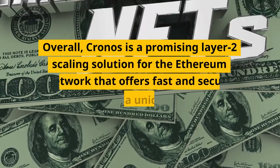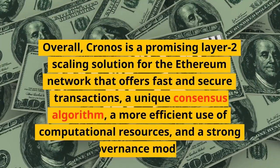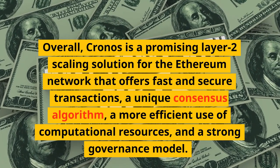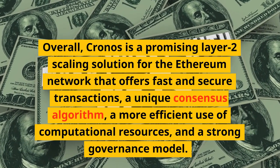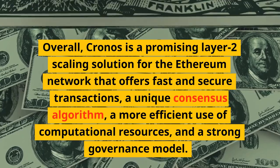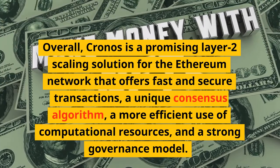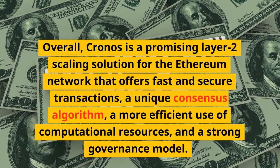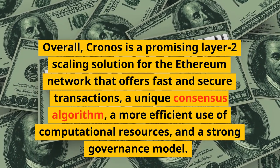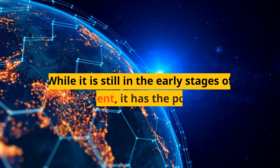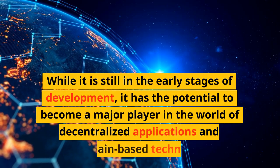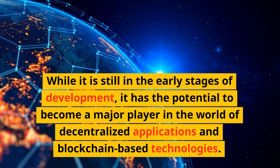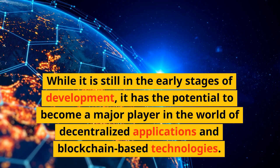Overall, Kronos is a promising Layer 2 scaling solution for the Ethereum network that offers fast and secure transactions, a unique consensus algorithm, a more efficient use of computational resources, and a strong governance model. While it is still in the early stages of development, it has the potential to become a major player in the world of decentralized applications and blockchain-based technologies.